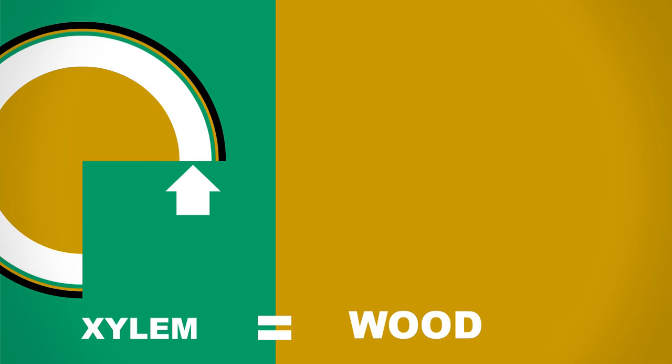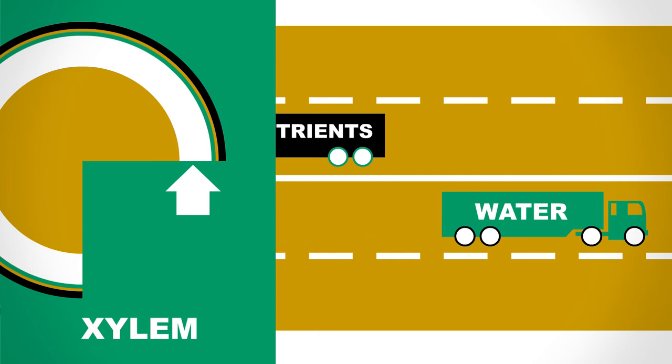Under the cambium is the xylem. Xylem is another name for wood. The outer layer of wood is called sapwood. Sapwood is like the superhighway of water and nutrients from the roots to the rest of the tree.